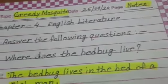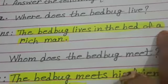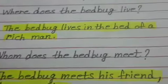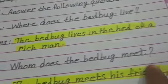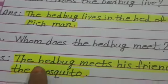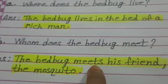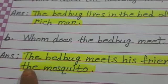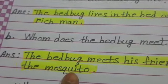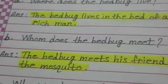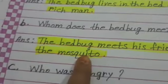1A: The bedbug lives in the bed of a rich man — meaning the bedbug stays in a rich man's bed. 1B: Whom does the bedbug meet? The bedbug meets his friend, the mosquito — meaning the bedbug met his friend the mosquito.